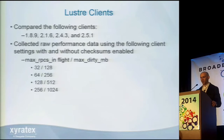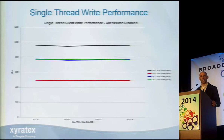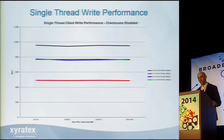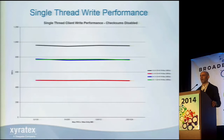Focusing on single thread performance first — one task on a client comparing reads and writes. With checksums disabled, looking at write performance: the top line in black is 1.8.9, the red line at the bottom is 2.1.6, and the overlapping green and blue lines are 2.4.3 and 2.5.1. The key takeaway is that 1.8.9 single thread performance is far better, but 2.4.3 and 2.5.1 vastly improved compared to the 2.1.6 client code.